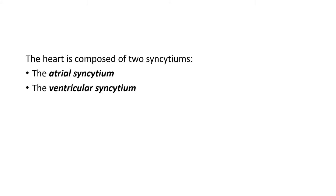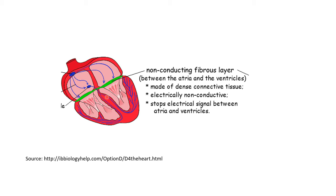The heart is actually composed of two syncytia: the atrial syncytium and the ventricular syncytium. In the atrial syncytium, the atrial cardiac muscle cells function together as a single unit, and in the ventricular syncytium, the ventricular cardiac muscle cells function together as one single unit. Between them, there is a dense layer of fibrous connective tissue that is electrically non-conductive — it does not allow the spread of electrical signals from the atria to the ventricle.